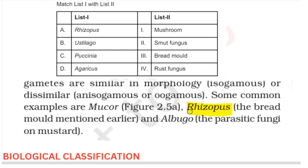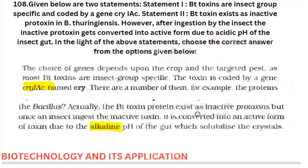The next is a match-type question from your biological classification — they are asking the other names. For example, Rhizopus is called the bread mold, and Albugo is a parasitic fungi. These are basically from the examples in your NCERT, from your biological classification chapter.